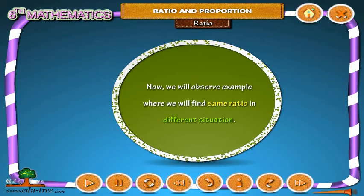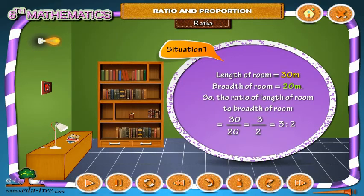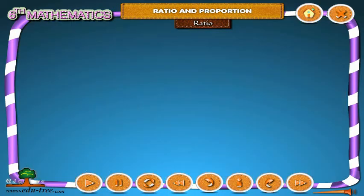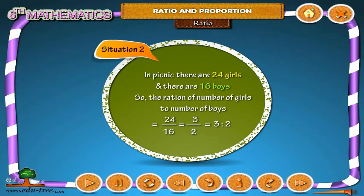Now we will observe an example where we find the same ratio in different situations. Situation 1: The length of a room is 30 meters and the breadth of the room is 20 meters. So the ratio of length to breadth is 30 by 20, which equals 3 by 2, which equals 3 ratio 2.